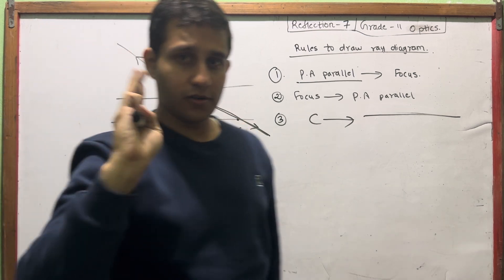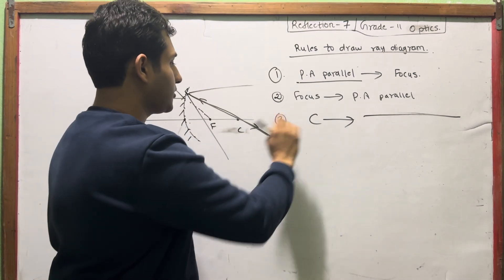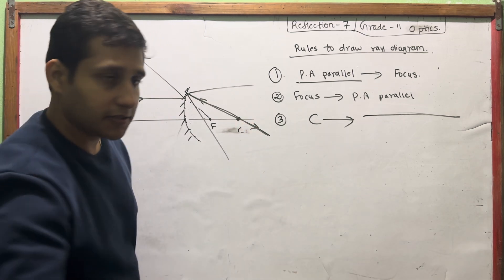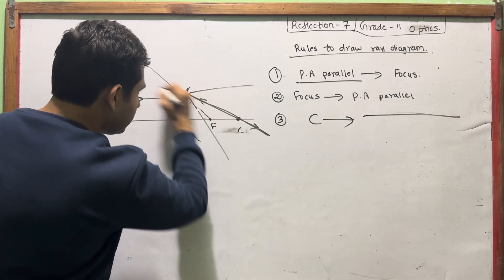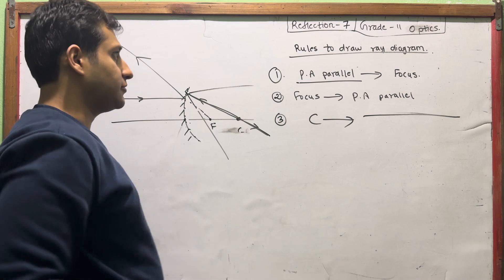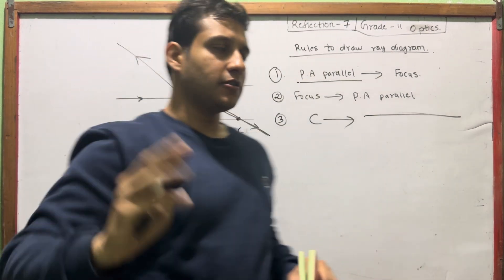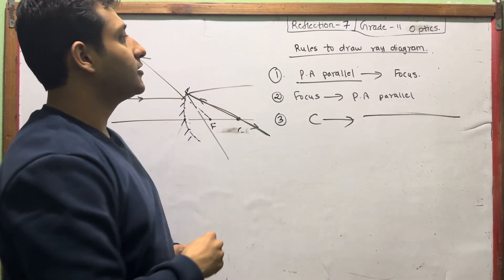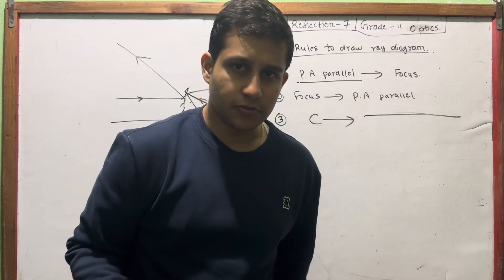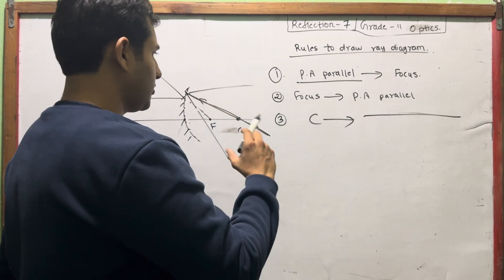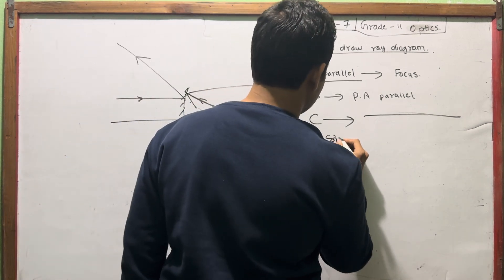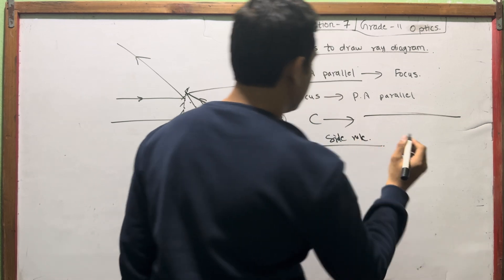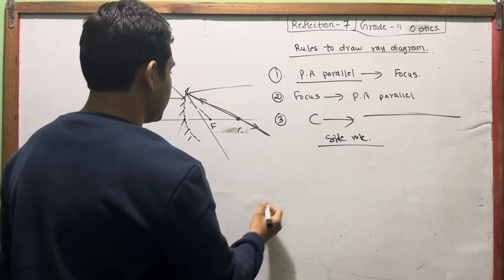In the third rule, the center of curvature acts like a light bulb — the ray goes back the same way. So we have three rules, and these rules are used to make the ray diagram. We have to make it this way.